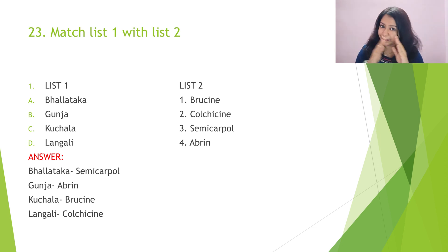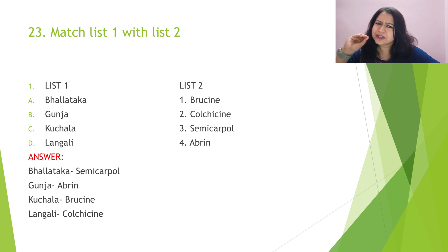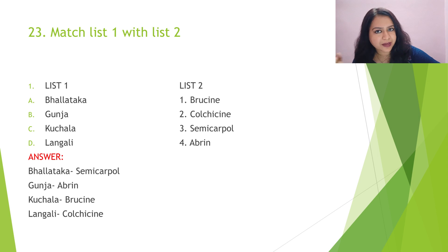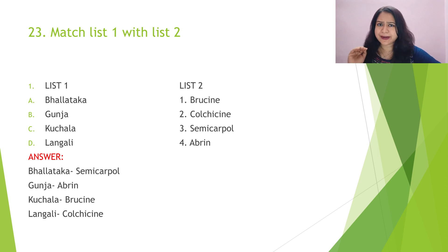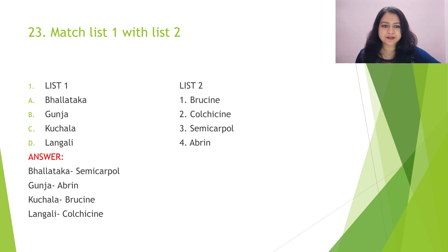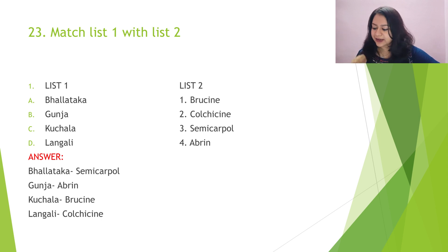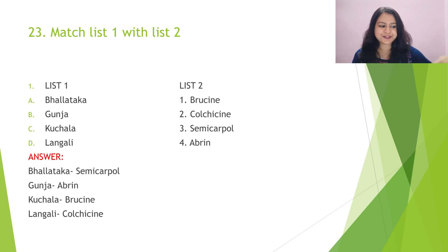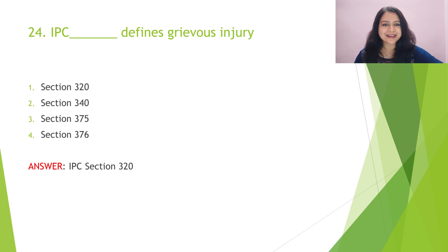For kuchala (also called kupilu), the botanical name doesn't give a direct connection, but it is wise to learn the chemical constituents of the detailed drugs. Kuchala's constituent is brucine. Then langali — we get Gloriosa superba, and its chemical constituent is colchicine. So it is better to learn at least the chemical constituents of the detailed toxicology drugs.